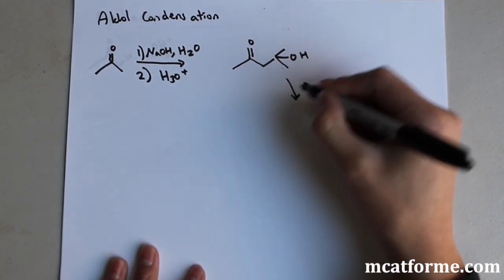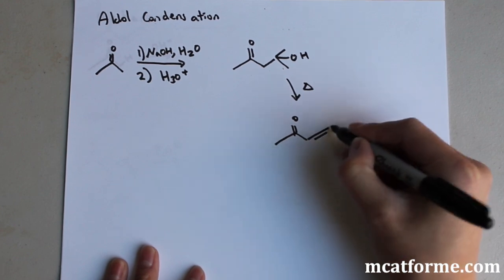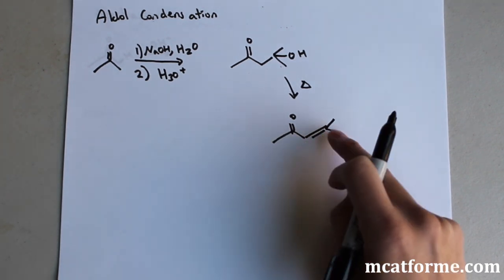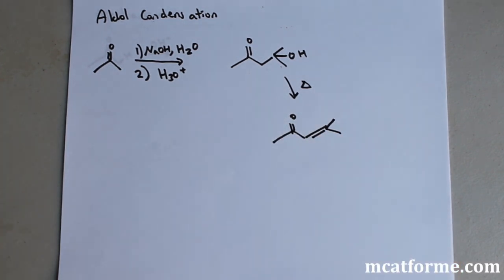And then when we add heat, we're going to get this molecule right here. And it's the alpha-beta unsaturated compound. Alpha-beta being this is the alpha carbon, this is the beta carbon, and it's unsaturated because it has a double bond.